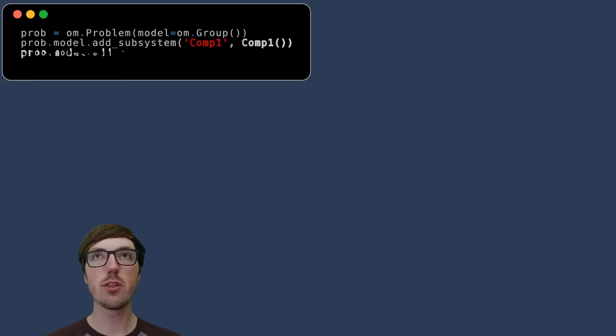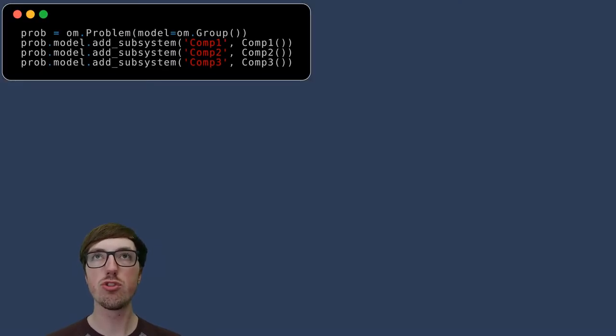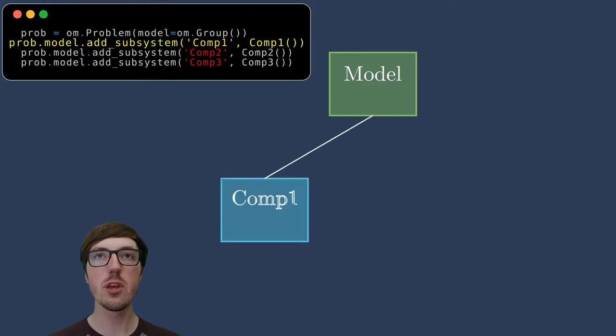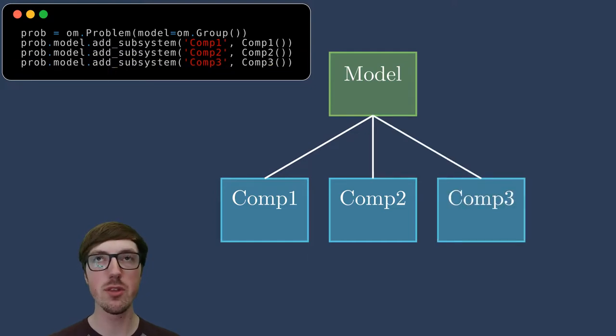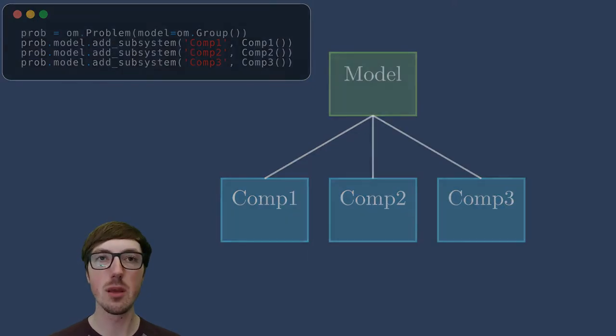In OpenMDAO, you could instantiate three components, using the code shown here. Here we have the model block, which is instantiated first by saying openmdo.problem model equals group. Groups here are shown in green and components are shown in blue. We can have three components as I show here. These all live at the same level.